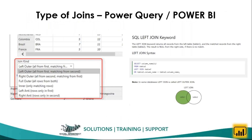That is the advantage of Power Query. If you want to apply a join in Power Query, you can simply see the list of different join types available. As a business user, you need to understand which type of join will be useful for your data, and then apply accordingly. We are not required to use SQL for joins between two tables.